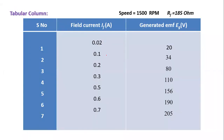These are the values obtained from the experiment. We are varying the field current and observing how the generated EMF increases. Once we know the field current and generated EMF values, we draw a graph between these two. From that graph we can identify the generated EMF constant KG. The motor is running at constant speed — 1500 RPM — keeping the mechanical input constant.